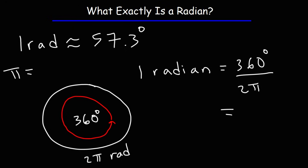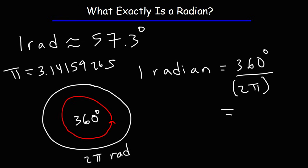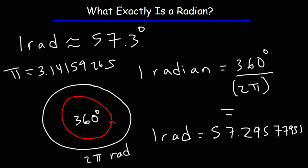Pi, even though you could use the rounded value of 3.14, it's equal to 3.141592654. Using that number in this equation — if you type into your calculator 360 divided by 2 pi — you're going to get the value 57.29577951, which if you round it, is approximately 57.3 degrees. So that is a radian.